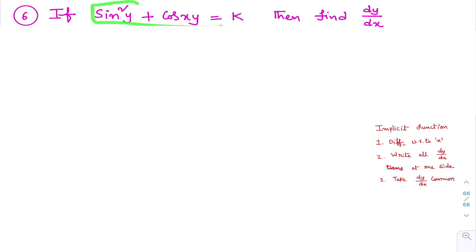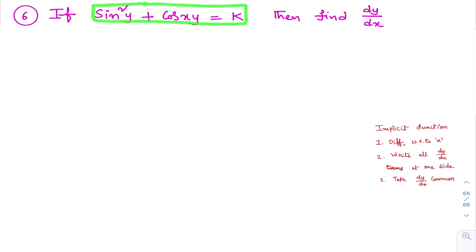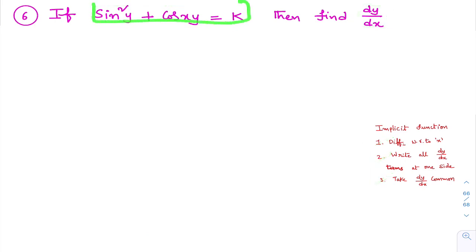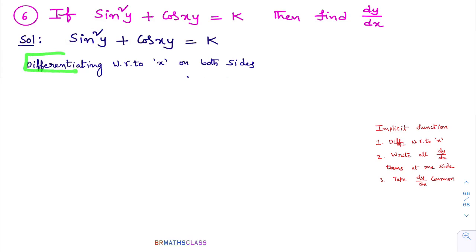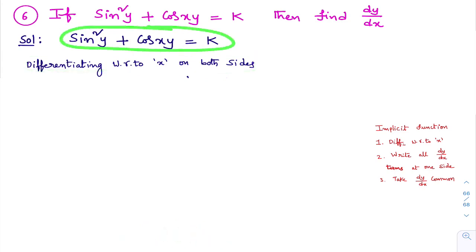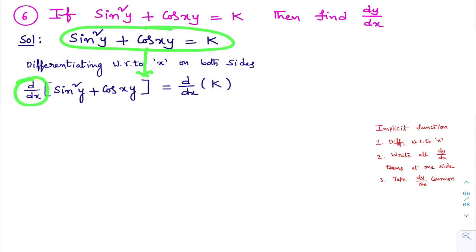Now see question six: sine square y plus cos(xy) equals k, then find dy/dx. The given function is in terms of x and y, so it is an implicit function. To calculate dy/dx from the implicit function, we follow three steps: Step 1, differentiate with respect to x on both sides. Step 2, write all dy/dx terms at one side. Step 3, take dy/dx common. Let's see how to find dy/dx from this implicit function. I will differentiate with respect to x on both sides.